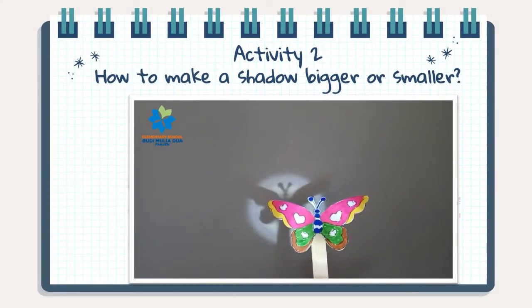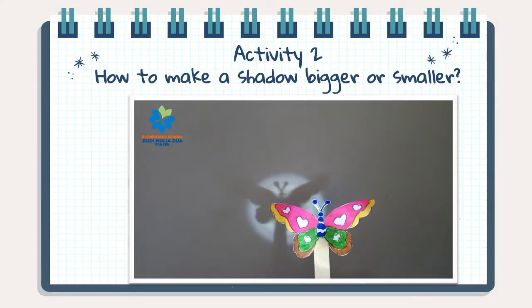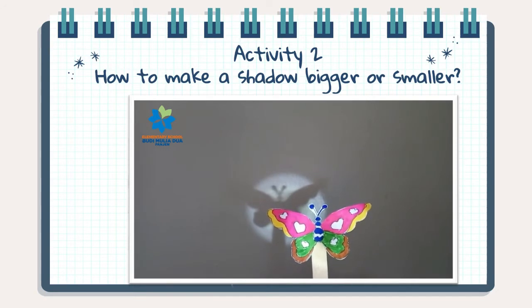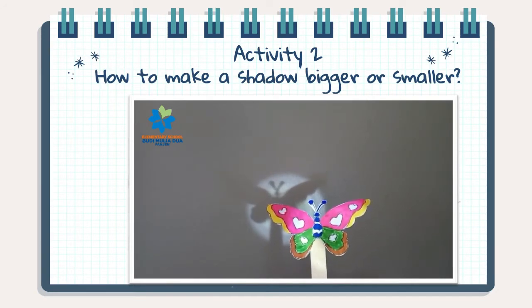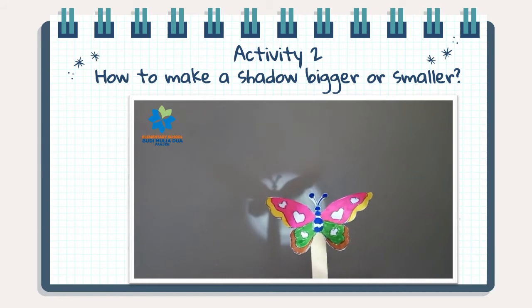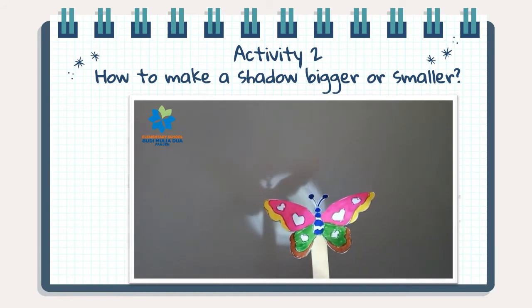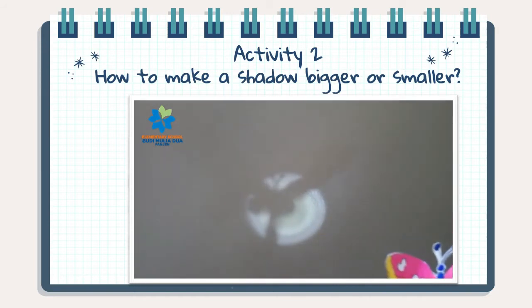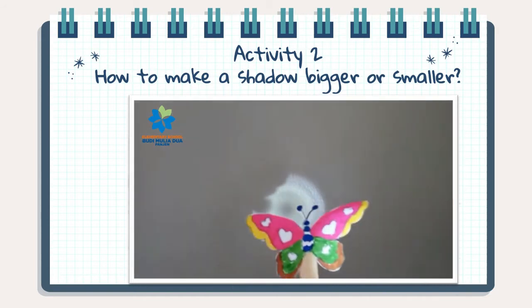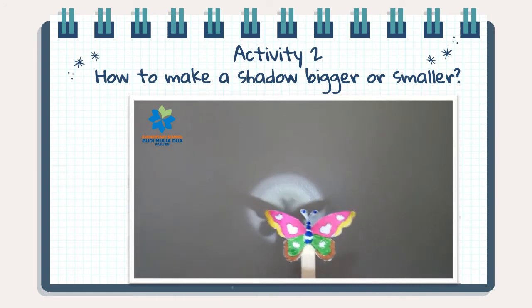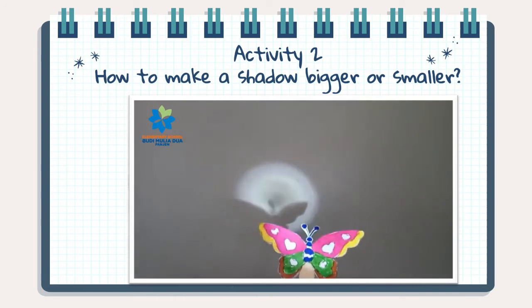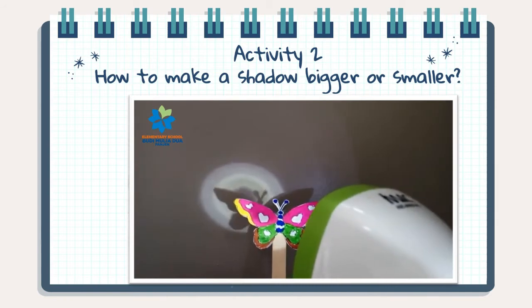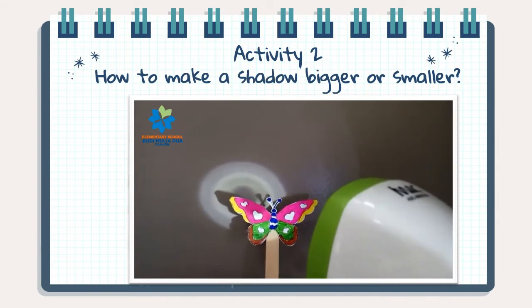How to make a shadow bigger or smaller? Indoors — di dalam ruangan — you can change the size of the shadow by moving the object closer to, mendekat, or farther away from the light. This is the light; the light comes from the flashlight.